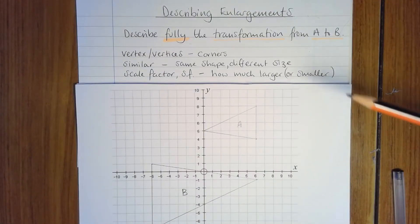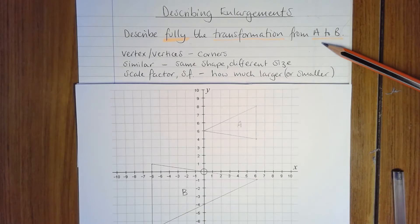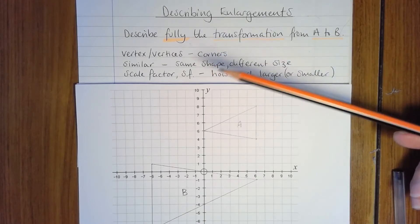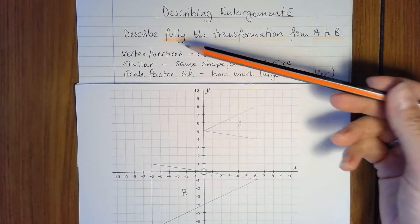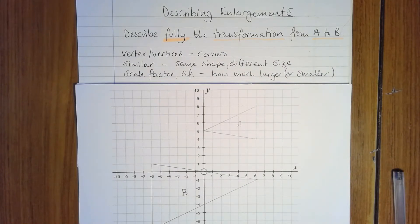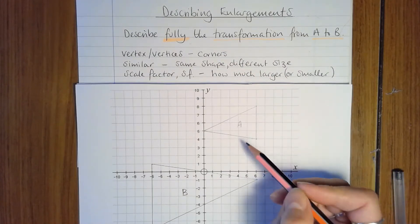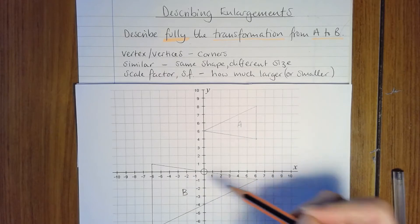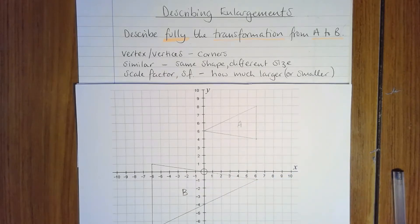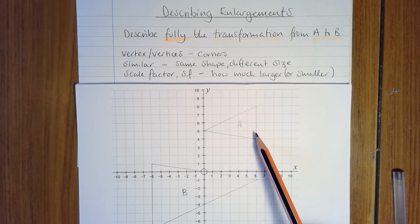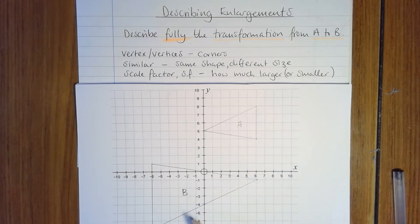In this question you're asked to describe fully the transformation from A to B. Fully means that there's more than one part to the description. From A to B, we're starting with A and going to B. Now it's clear to see that this is an enlargement because the shapes are not the same size, but usually the shapes point in the same direction. But here B is pointing in the other direction, so that indicates that this is an enlargement by a negative scale factor.